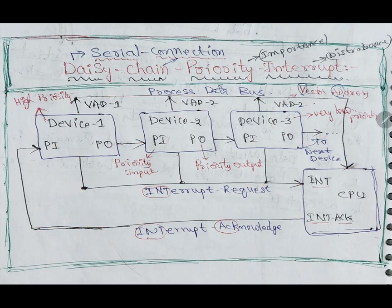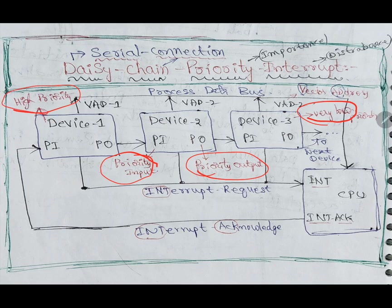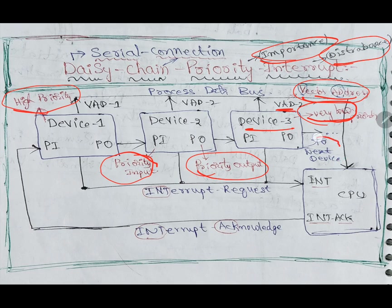Write the diagram neatly, pause the video, and draw the diagram two or three times. The parts I am explaining — with the red marker — are explanation parts not found in textbooks. By reading the theory matter we can understand these synonyms. VAD full form is vector address. This device is having low priority, and INT means interrupt request.